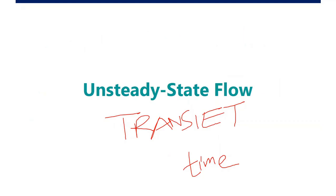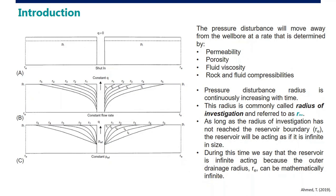Unsteady-state. For introduction, the pressure disturbance will move away from the wellbore at a rate that is determined by porosity, permeability, fluid viscosity, and rock and fluid compressibility. Pressure disturbance radius is continuously increasing with time.